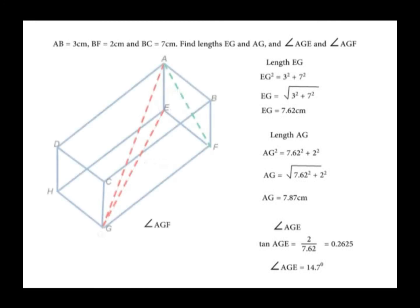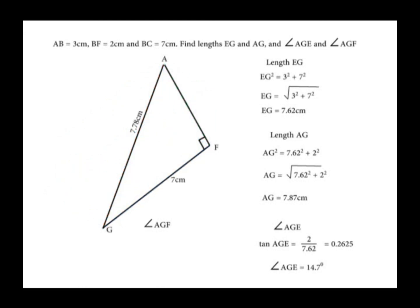Finally, angle AGF. Line EF and GF are perpendicular, meaning plane ABFE is perpendicular to line GF. Therefore, any line on that plane is perpendicular to GF, so AGF is a right-angled triangle. We can find the angle AGF: cos(AGF) equals 7 over 7.87, which gives 0.889. The cos inverse of that is 27.25 degrees.